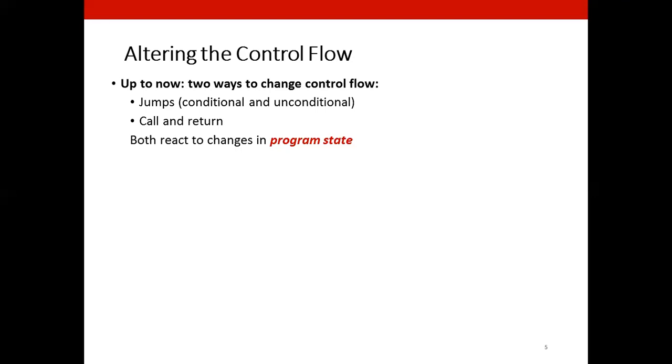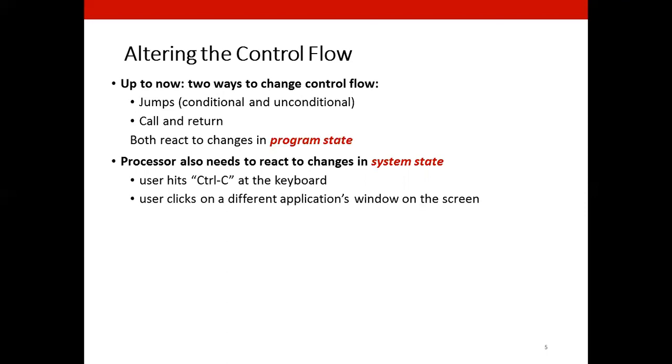But all of these control flow instructions react to changes in the program state. That is nothing but information in program status word and contents of the memory, but the processors also need to react to changes in the system state, not just the program state. For example, what if the user clicks on control C on the keyboard or the user clicks on a different application's window on the screen.